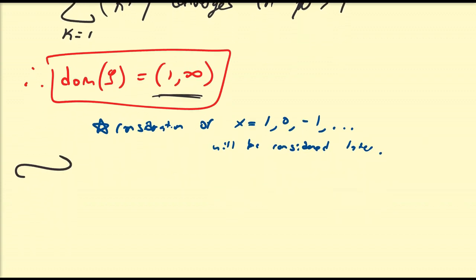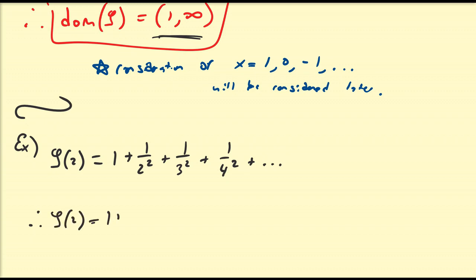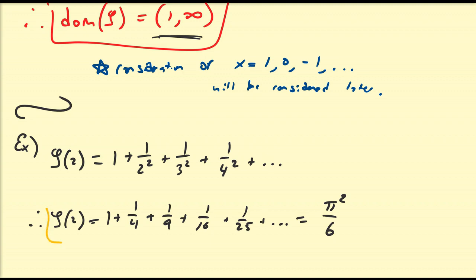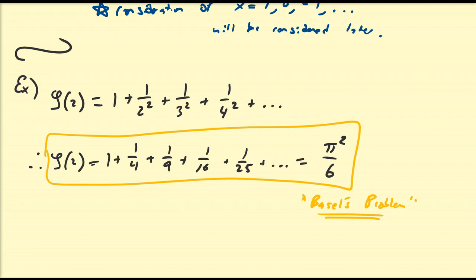For notation purposes, let's look at zeta of 2. Since 2 is greater than 1, this converges. So zeta of 2 equals 1 plus 1 over 2 squared plus 1 over 3 squared plus 1 over 4 squared, and so on — that is, 1 plus 1/4 plus 1/9 plus 1/16 plus 1/25, and so on. It's the sum of the squared reciprocals of positive integers. One can verify this equals pi squared divided by 6, which is referred to as the Basel problem. We'll revisit this later with extra tools to verify it in a simplistic manner.